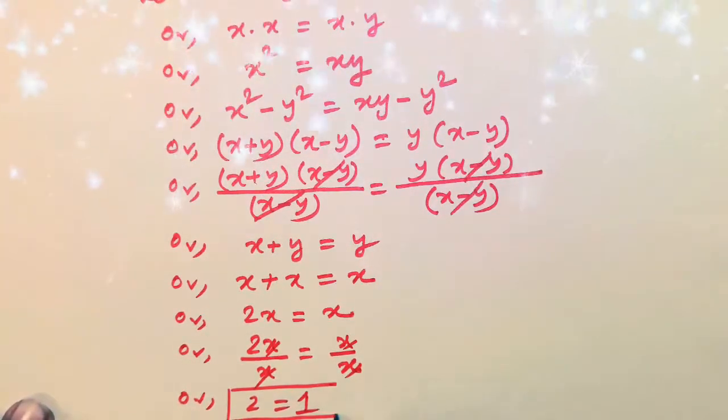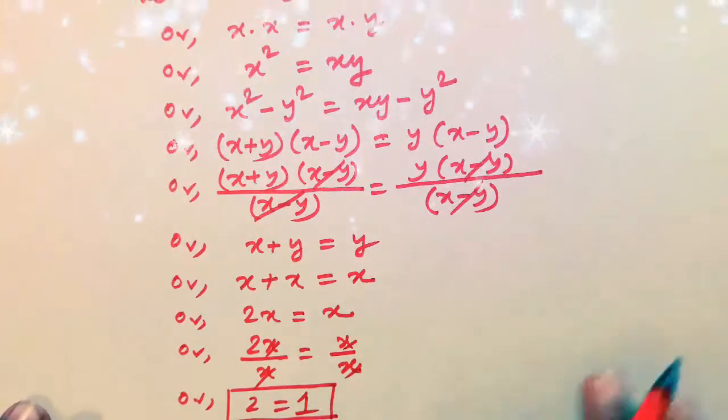Now our question is, where is the problem? Because 2 can't be equal to 1. This cannot be equal. But since we have got this one, 2 is equal to 1, so this is very urgent to find out where the problem arises.